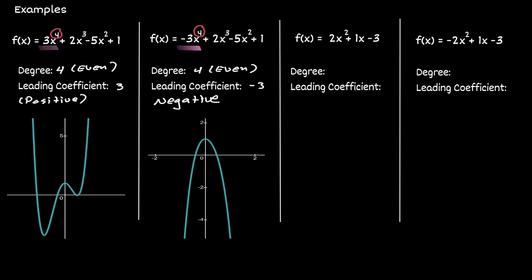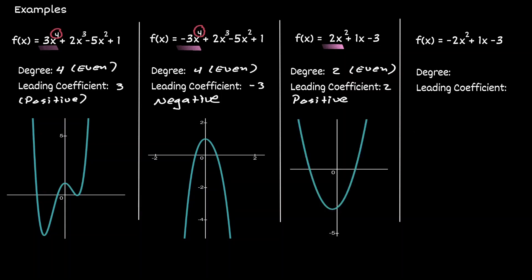Let's take a look at the next example, concentrating on the leading term. Notice that now the degree is two, which is an even number. And the leading coefficient is a value of two, which is positive. Now let's graph this function. And now we concentrate on the last polynomial — the leading coefficient term is right here. Notice that the degree is a value of two, which is even. And the leading coefficient is negative two, which is negative. Now let's graph this function.